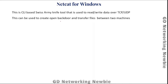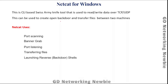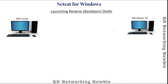Netcat can be used for different functions, but we are only going to cover two uses in this video. Some of the uses include scanning, banner grabbing, port listening, transferring files, and launching reverse shells. For this video, we will first install Netcat on Windows 10, then look at port listening and launching a reverse shell.